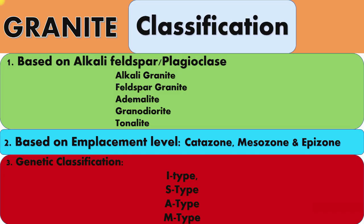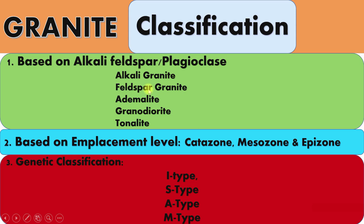Next is the classification of granites. Based on the alkali feldspar to plagioclase ratio, granites are classified into five categories. When alkali feldspar is 100% and plagioclase is 0%, the rock is called alkali granite. If granite shows 90% alkali feldspar and 10% plagioclase, it is called feldspar granite. If composed of 65% alkali feldspar and 35% plagioclase, it is called adamellite.